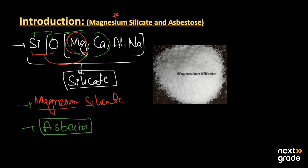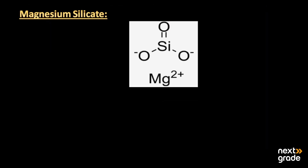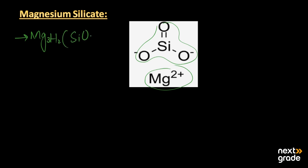Here we have a picture of magnesium silicate, which appears as a white powder form — it is a crystalline solid having properties like a salt of silicon. The simple formula for magnesium silicate has magnesium ions surrounding silicon trioxide. The formula is Mg₃, in which three magnesium atoms are attached to two hydrogen atoms with silicon trioxide.